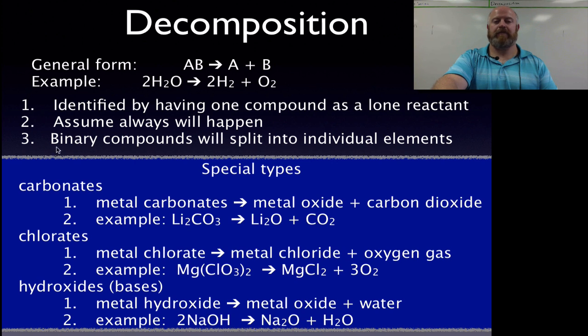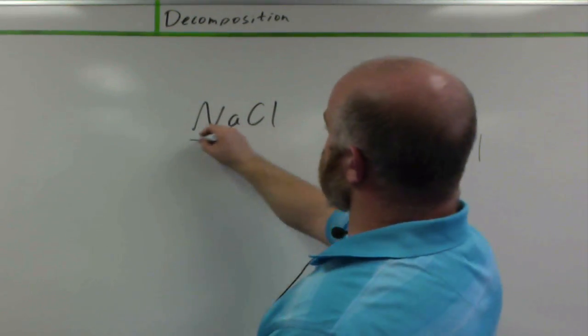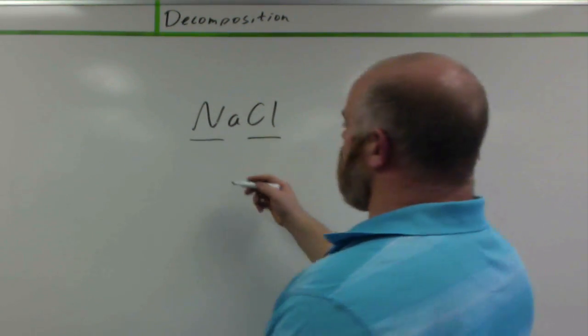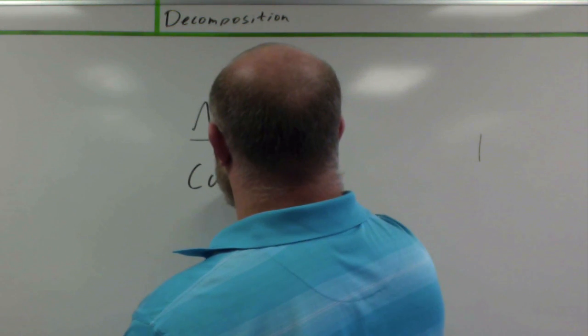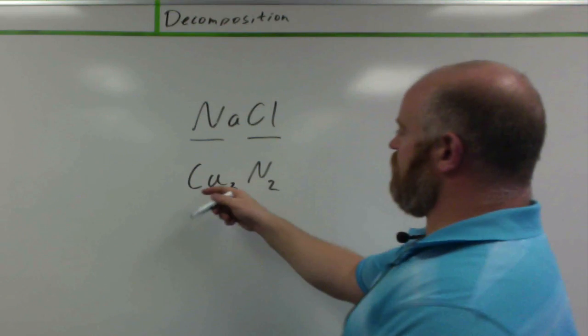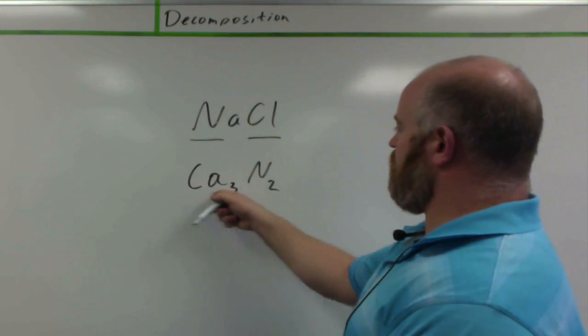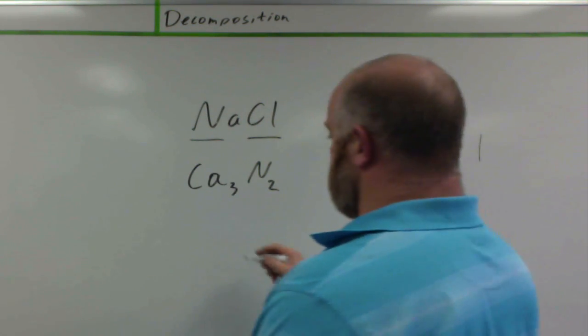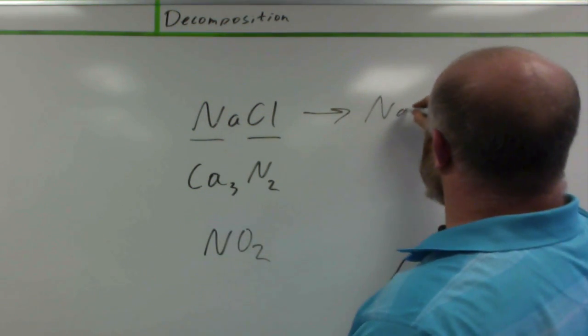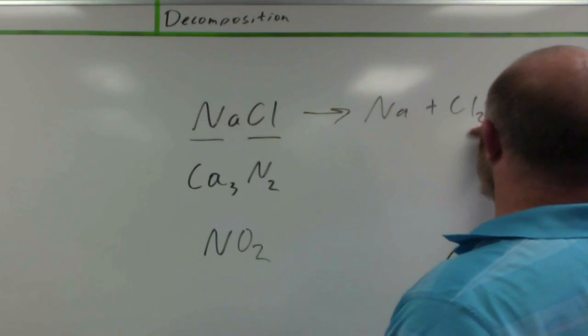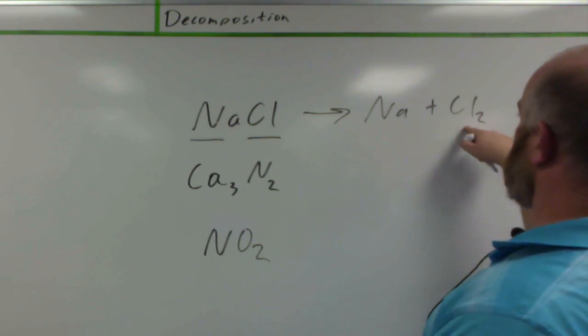When it comes to our binary compounds, so for example, what I mean by that is binary compounds are like sodium chloride, where it has two things to it being a binary compound, or calcium nitride being binary. So for our binary compounds, or nitrogen dioxide, they're all just going to split into their two pieces.